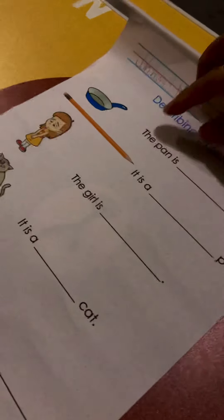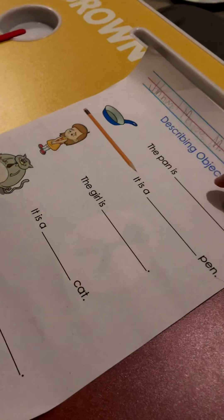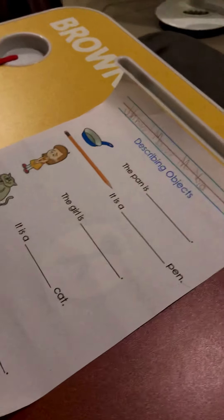What can you say? The pan is circle. You're right, circle.